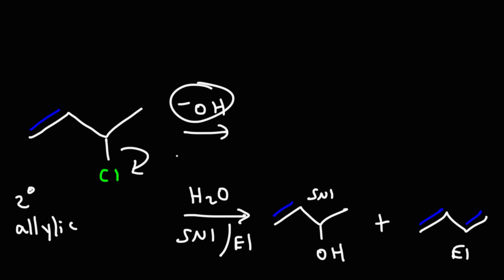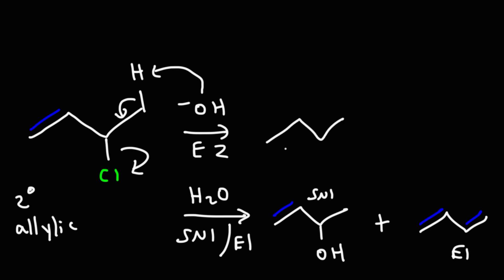With a strong base and a secondary alkyl halide, that favors the E2 reaction over SN2. So this mechanism is predominantly E2: hydroxide removes the hydrogen, forming an alkene, and kicks out the leaving group. The fact that we get a conjugated alkene increases the likelihood of the E2 reaction. If this were a primary allylic halide with a strong base, that would favor SN2. But for a secondary alkyl halide, E2 is favored when there's an available hydrogen — and the formation of a stable conjugated diene further increases the likelihood of E2.